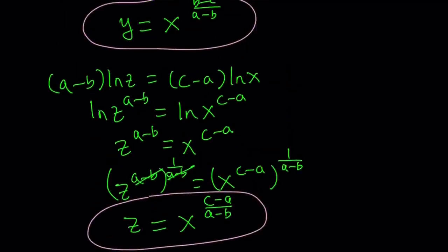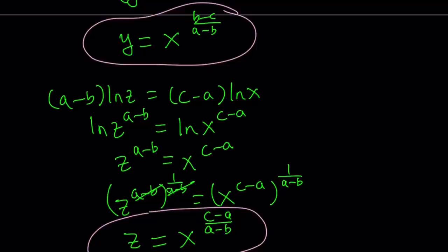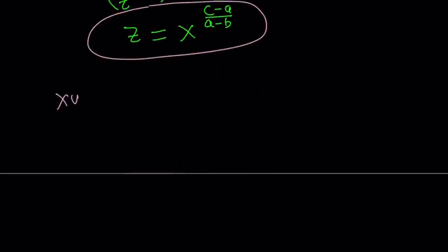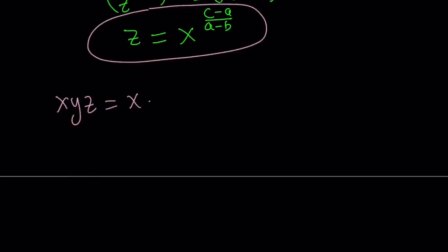Now we have y and z and now we're going to put it all together because our goal is to evaluate x, y, z. Remember? So let's go ahead and put it together. x, y, z is equal to x times y which is x to the power b minus c over a minus b times z which is x to the power c minus a divided by a minus b.